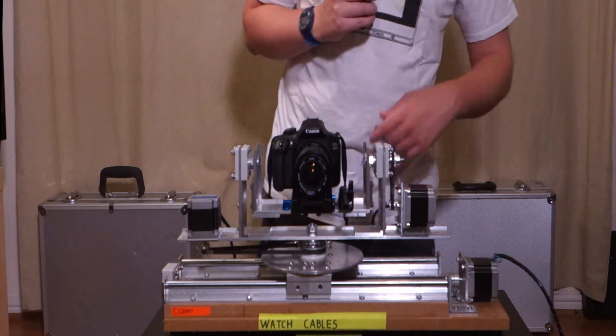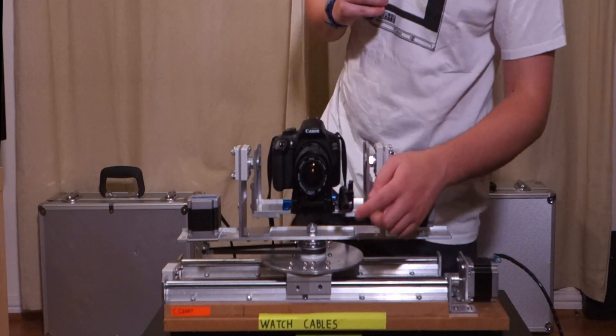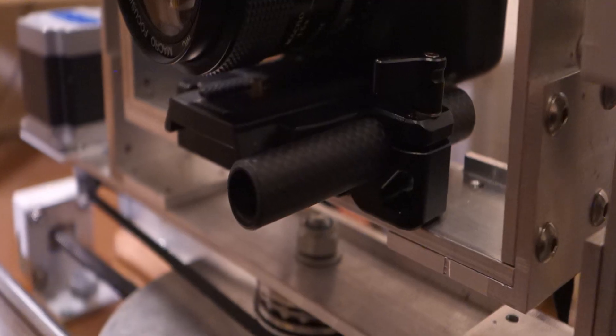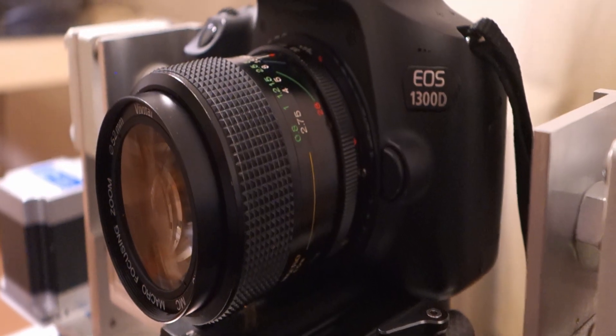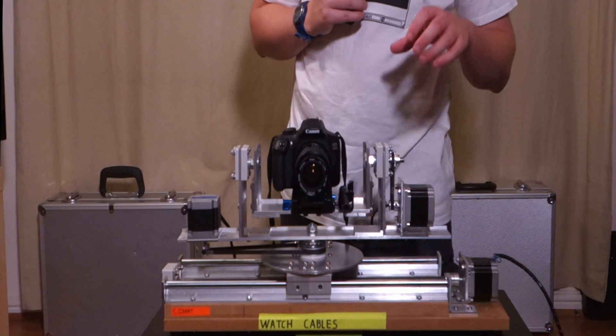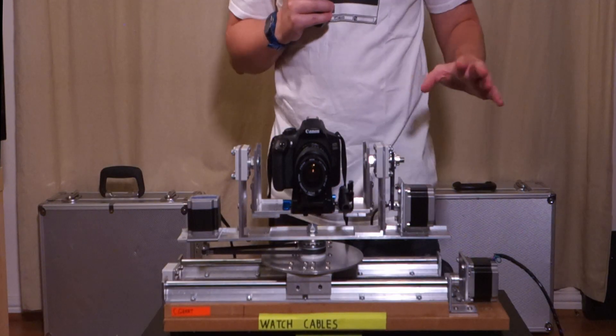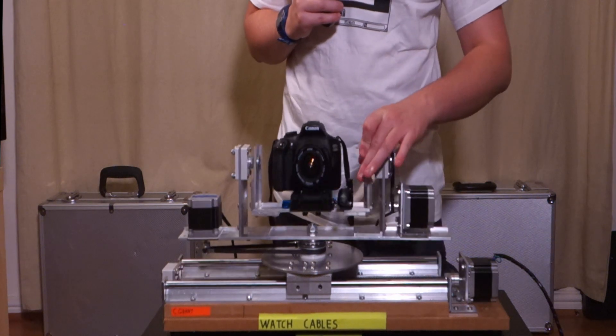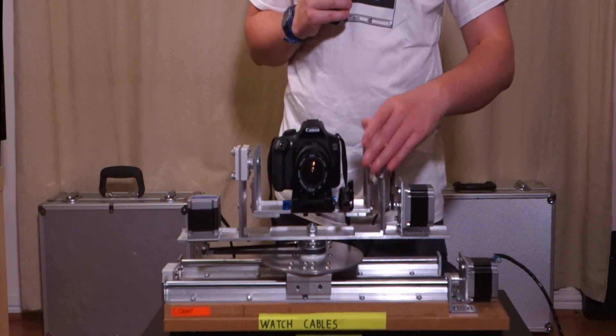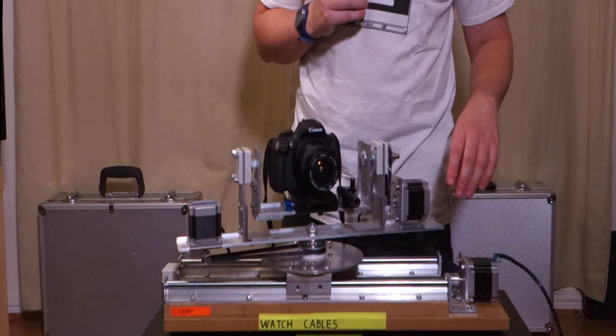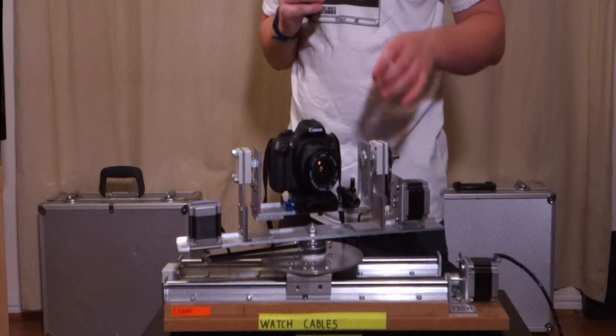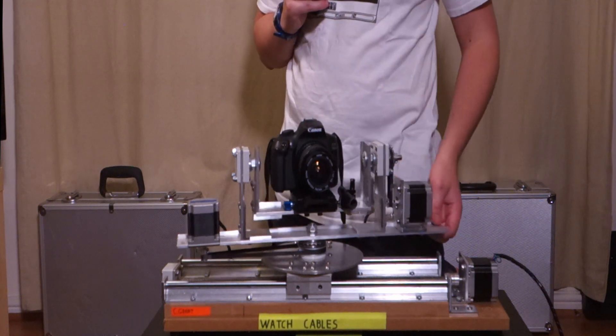Here on the front of the rig we have a bit of 15 millimeter rod which is a standard thing for mounting stuff on which is what the focus unit goes on. We've got a mixture of belts which are used for the pan and the tilt function and on the track function we have a lead screw which has got a bit of copper grease on to help it move a lot better.